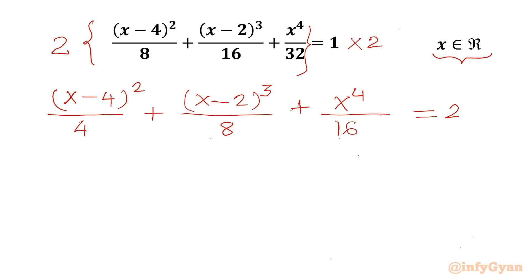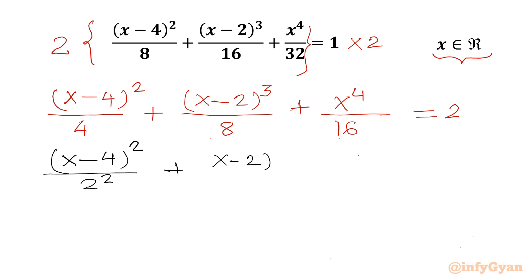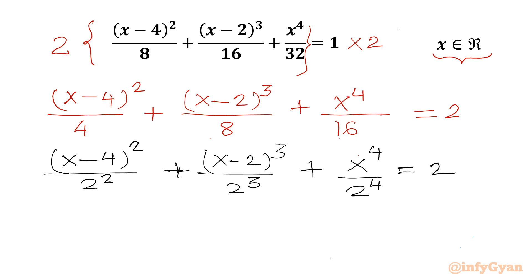Now we have 4, 8, and 16 in the denominators. We can write 4 as 2², 8 as 2³, and 16 as 2⁴. Using the exponent property aⁿ / bⁿ = (a/b)ⁿ, we can rewrite the equation with combined bases.